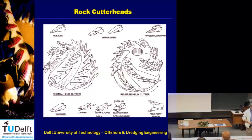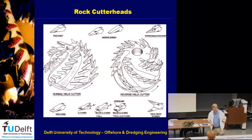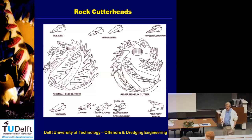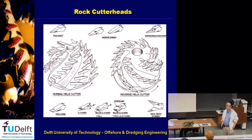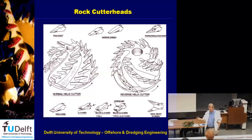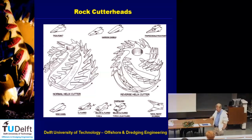In dredging we use cutter heads to cut rock, and that's not exceptional — we often do that, going to rocks of about 60 MPa. I noticed some people didn't follow the introduction dredging course where I looked into soil mechanics, and not everybody had soil mechanics. So if you want to know more about material properties and behavior, you should download the soil mechanics lecture notes I put under week one. There you can find values for compressive strength and other parameters.